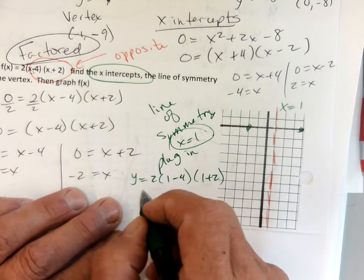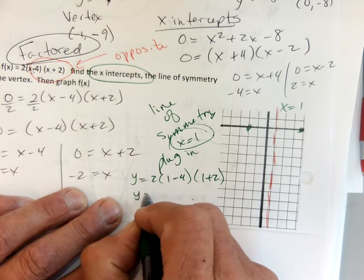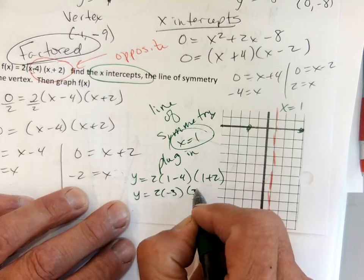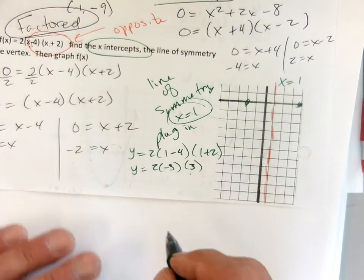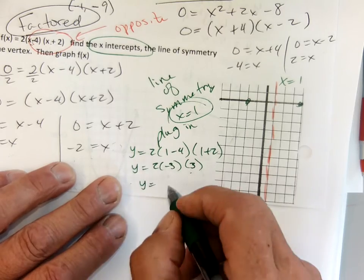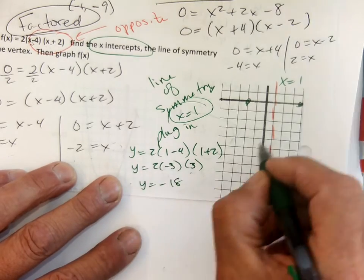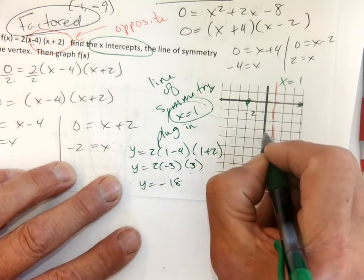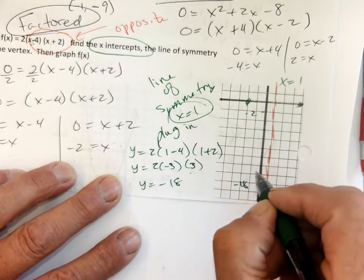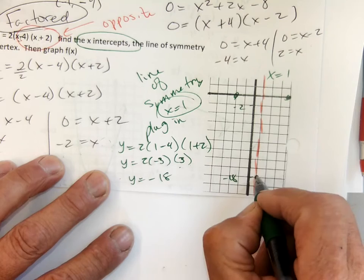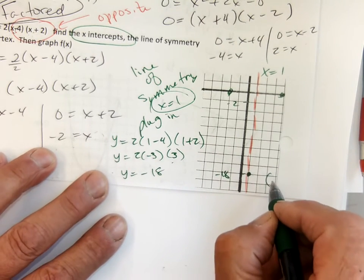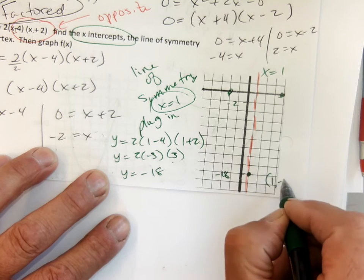2 times negative 3 times 3 gives negative 18. So it's going to be off my page — I'm going to have to go by 2's: negative 2, 4, 6, 8, 10, 12, 14, 16, 18. And there's my vertex at 1, negative 18.